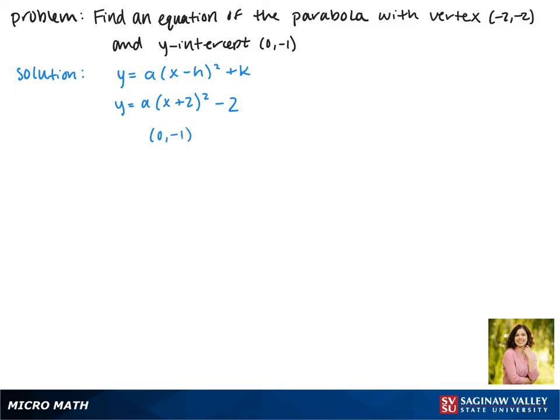We can plug in the point so that we can solve for a. We get negative 1 equals a times 0 plus 2 squared minus 2.